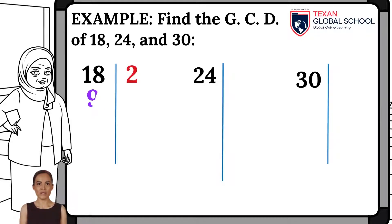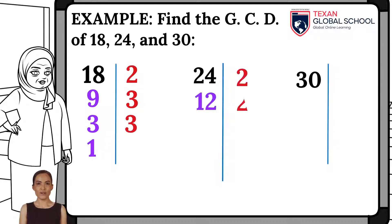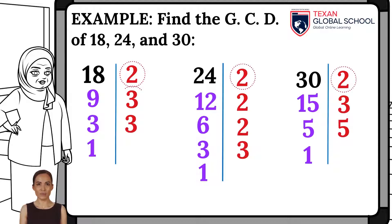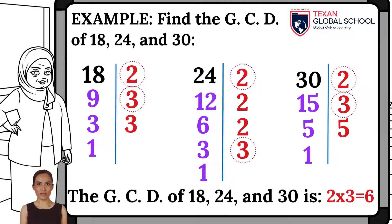The prime factors of 18 are 2, 3, and 3. The prime factors of 24 are 2, 2, 2, and 3. The prime factors of 30 are 2, 3, and 5. As we can see, all numbers have the same prime factors, which are 2 and also 3. Hence, the maximum factor is 6, since it is the largest integer that can divide all the numbers.